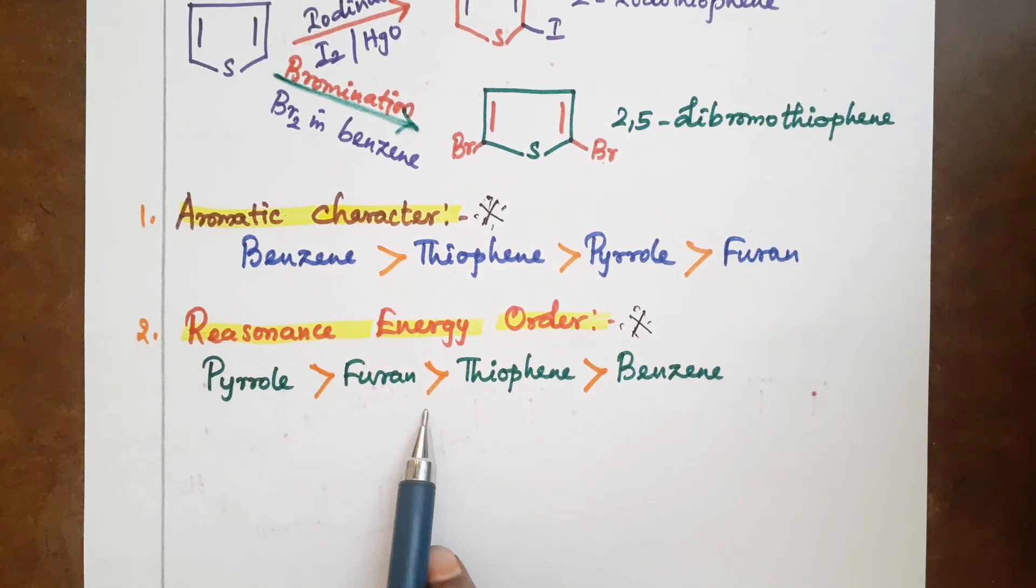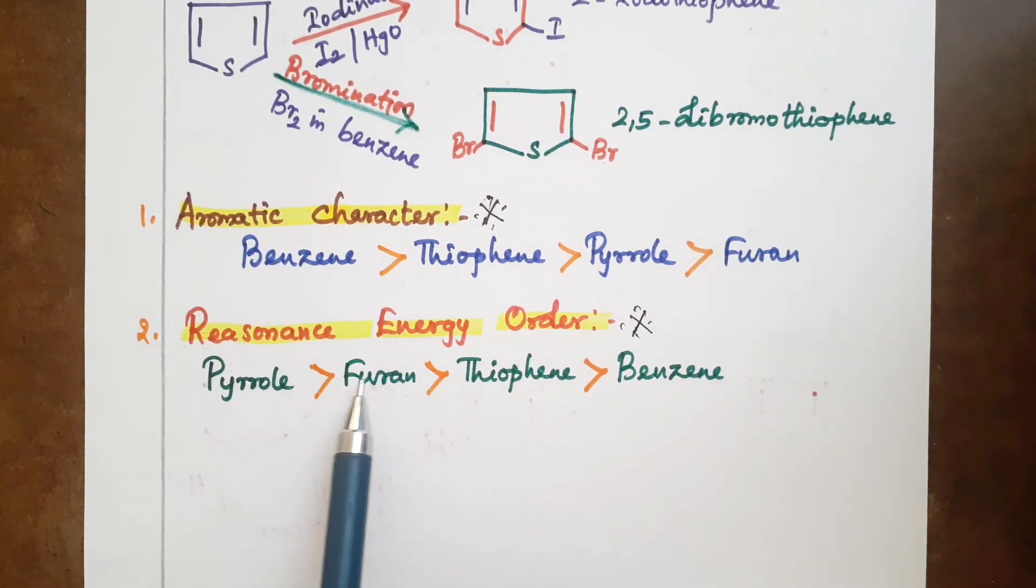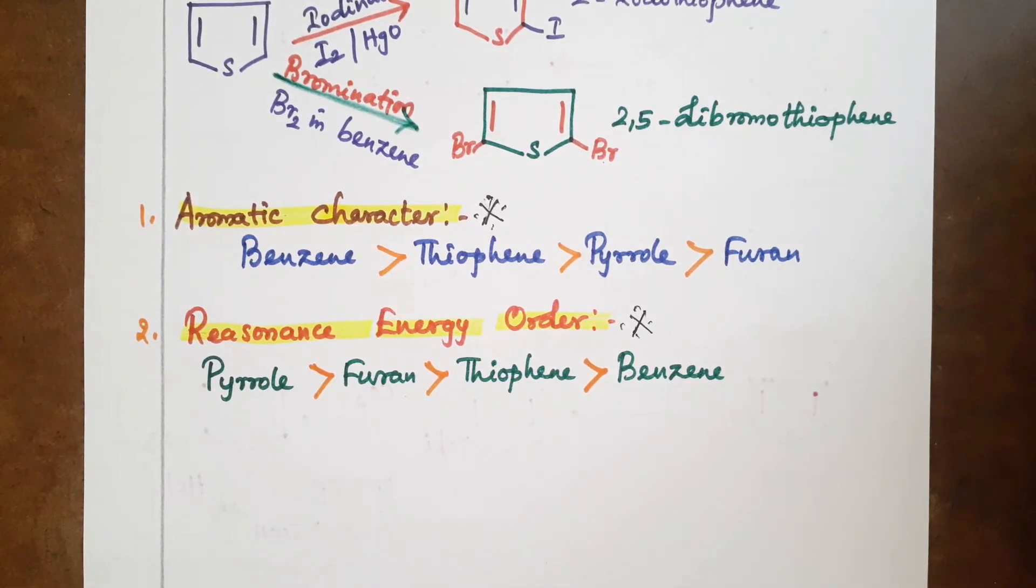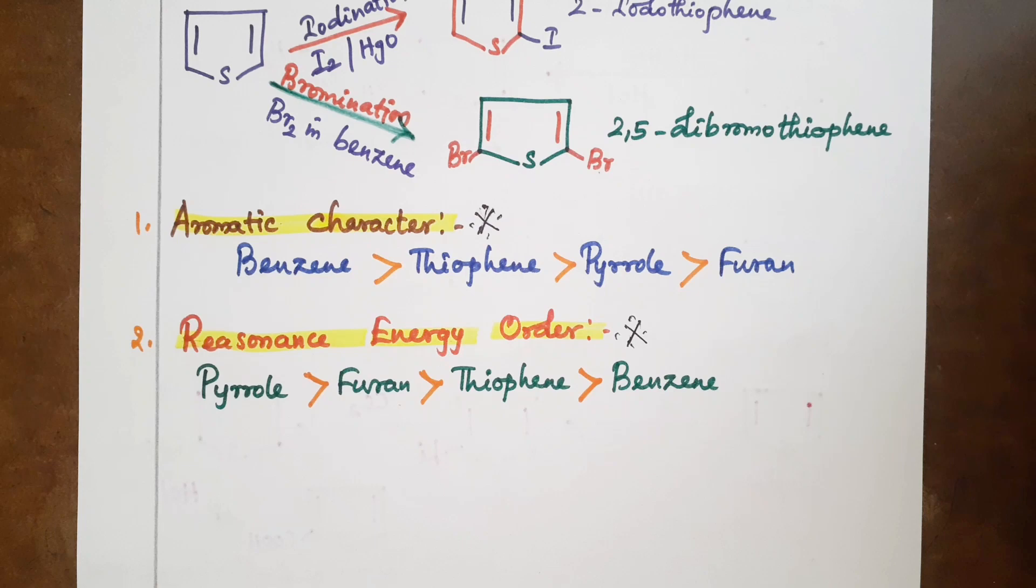Resonance energy order: pyrrole is greater than furan, furan is greater than thiophene, thiophene is greater than benzene. We covered thiophene reactivity and synthesis. If you like, share and subscribe. Thank you.